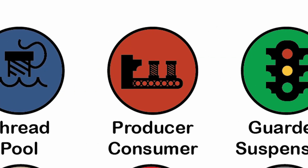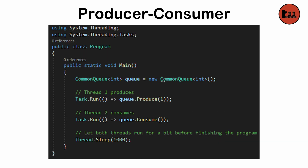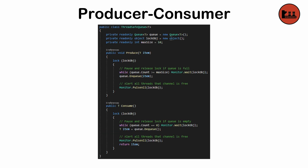The producer-consumer pattern — a way to introduce coordination between threads. One set of threads produces data and another consumes it. A shared queue acts as the middleman, balancing the flow. This is perfect for scenarios like logging systems or data pipelines, where tasks are unevenly produced and processed.